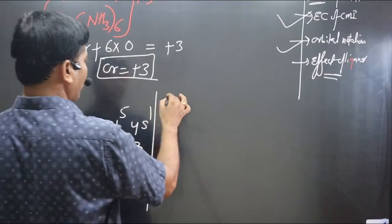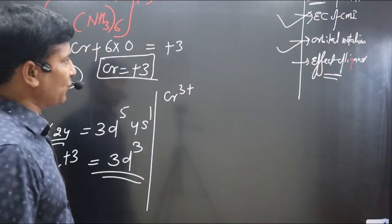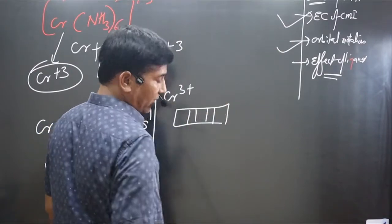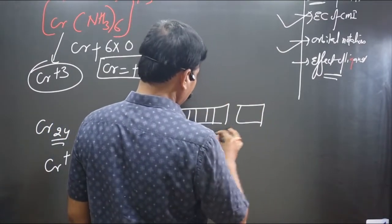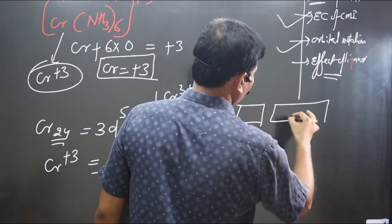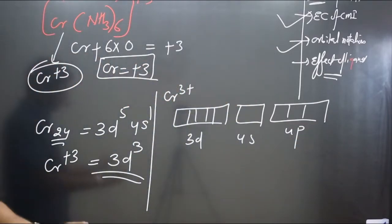For Cr3+, we have to write orbital notation. First, we have d orbital with five boxes, then 3d 4s vacant, and then we have 4p.